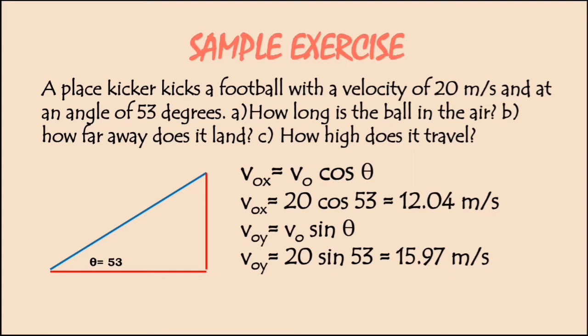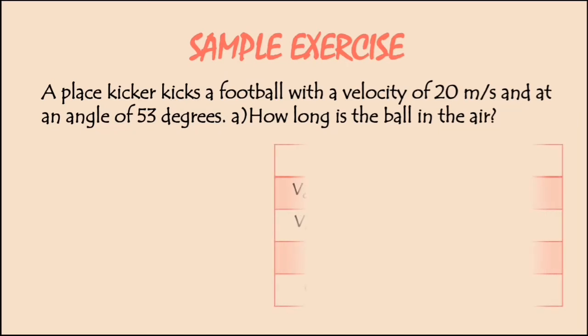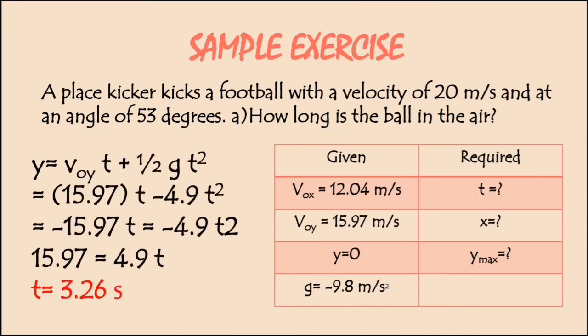After that, we're going to have also the value of the velocity in vertical position using v_y = v sin θ. Also, 20 meter per second, sine 53, then we're going to have a value of 15.97 meter per second.